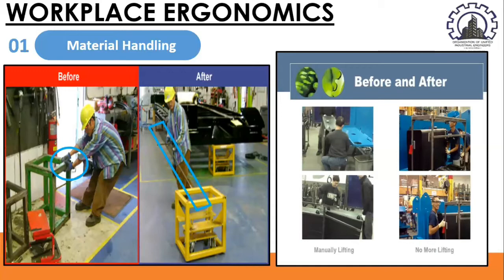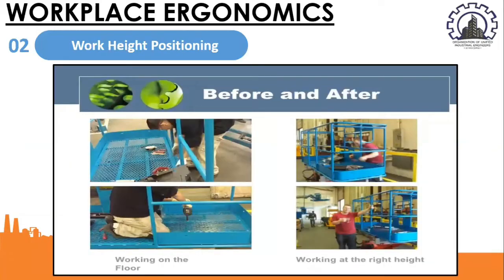The second example evident in workplace ergonomics would be work height positioning. As you can notice in the first picture, the worker is working on the floor, which can be hazardous because workers may get back pain. In order to improve this, we need to ensure that workers are working at the right height.